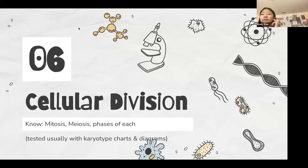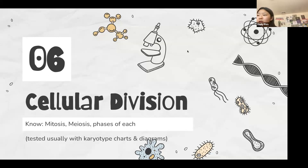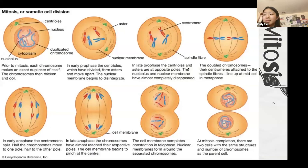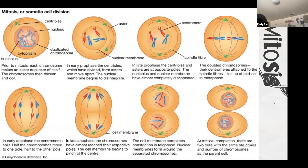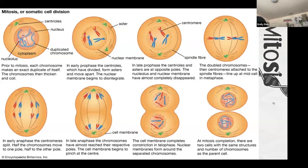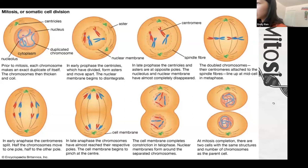Now we have two minutes to get through cellular division and miscellaneous. For mitosis, you're going to be asked to look at a picture and identify what stage of cellular division it is. That's why it's useful to have diagrams in your notes.